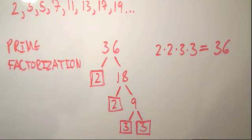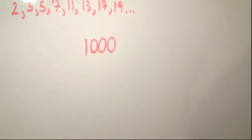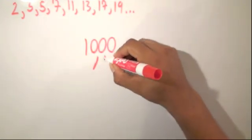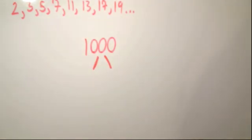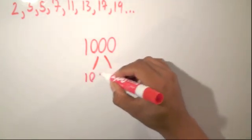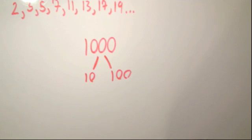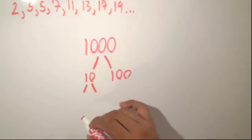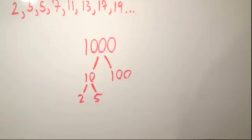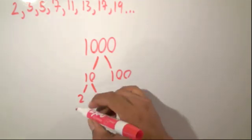Now we are going to factor a larger number that is a little bit more challenging — the number 1,000. Again, we will start with our number and using the tree method, draw two branches. We're going to think of two factors of 1,000, and for me, 10 and 100 come to mind, because when you multiply 100 times 10, you get back to 1,000. First, we look at 10 and think of two factors — 2 and 5. Looking at 2 and 5, I notice they are on my list of prime numbers, which means they cannot be broken down any further, so I will stop there.